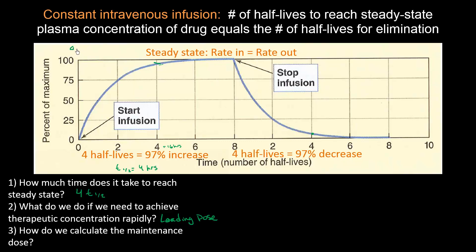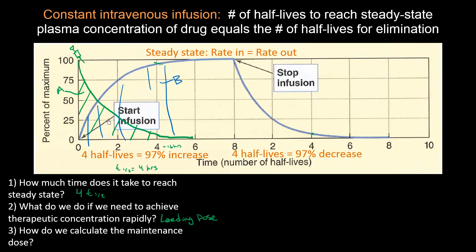A loading dose is essentially an IV bolus given right away. If you give an IV bolus, the concentration comes down rapidly — at about four half-lives, it's about 97% eliminated. The area underneath these curves is proportional to the amount of drug absorbed. If we call the area under the bolus curve A, and the area under the infusion curve B, notice that A essentially complements B. Adding them together — call it C = A + B — you would get a combined profile.